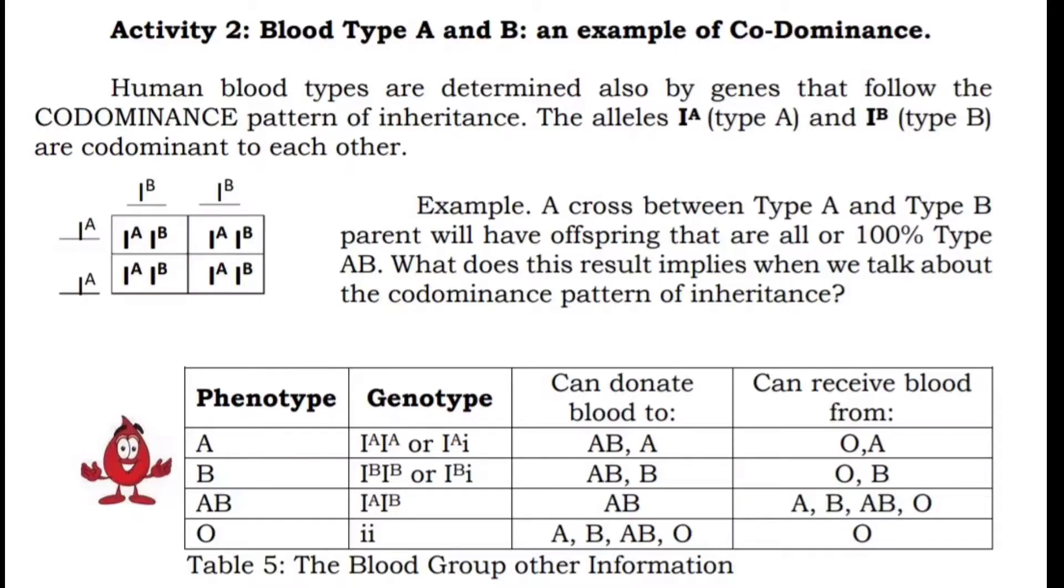Human blood types are determined also by genes that follow the co-dominance pattern of inheritance. The alleles IA or type A and IB or type B are co-dominant to each other.